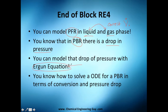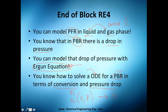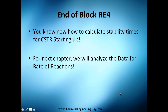You know the PBR and that there is a pressure drop, and you can model that pressure drop with the Ergun equation. You know how to derive it, how to use it, and how to solve an ordinary differential equation for a PBR in terms of conversion and pressure drop — F1 and F2 are functions of conversion and pressure, and you get the total amount of catalyst needed. You also know how to calculate stability times for a CSTR starting up.